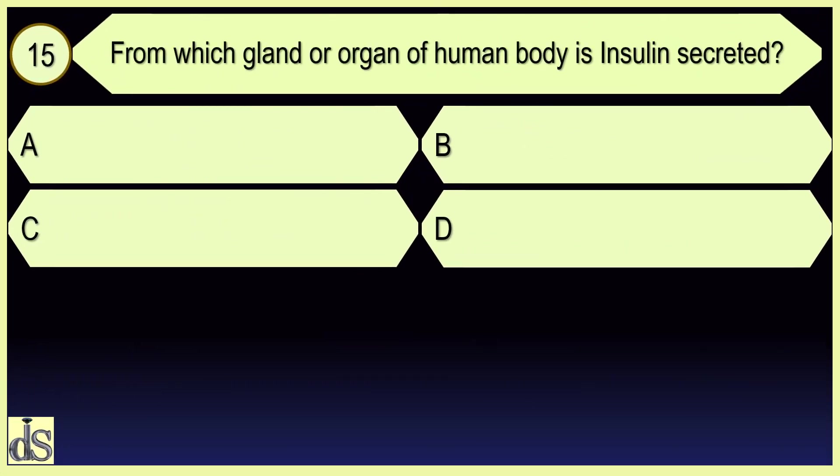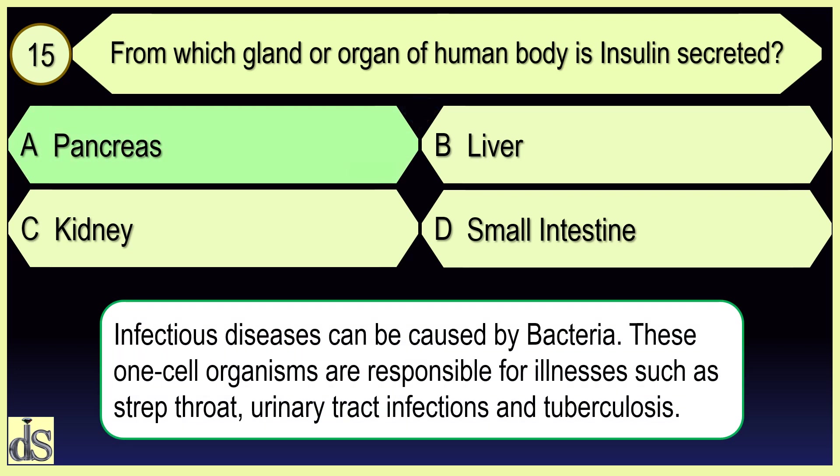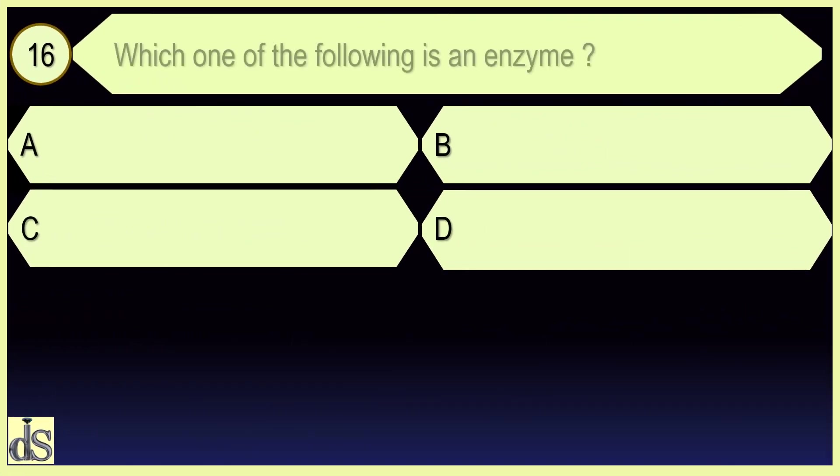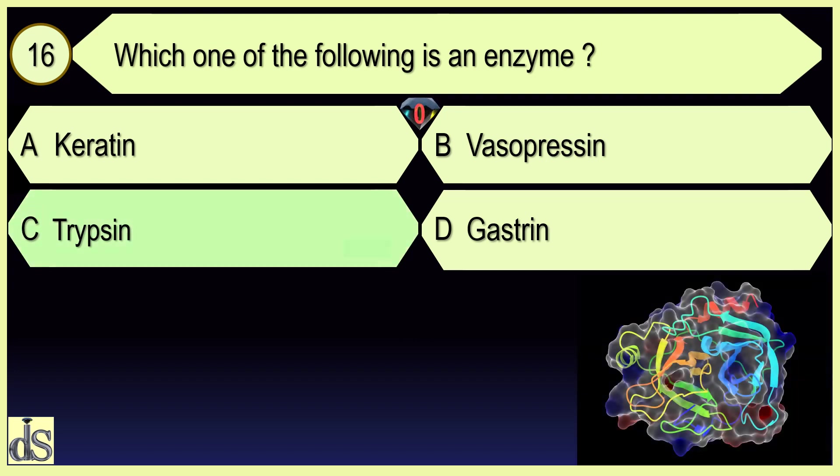From which gland or organ of human body is insulin secreted? Pancreas. Which one of the following is an enzyme? Trypsin.